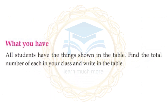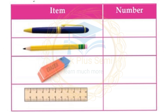Next activity: All students have the things shown in the table. Find the total number of each item in your class and write it in the table. The items are: pen, pencil, eraser, and scale.